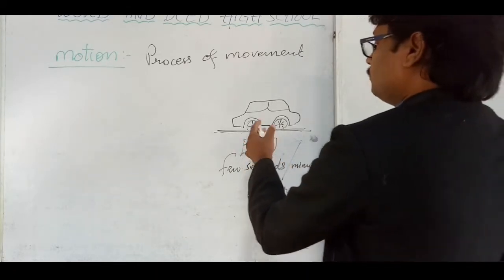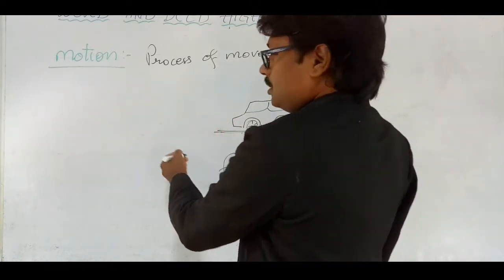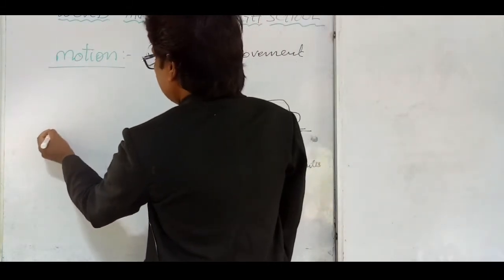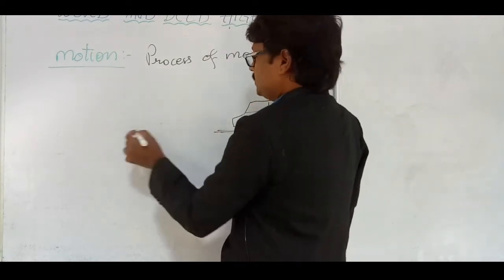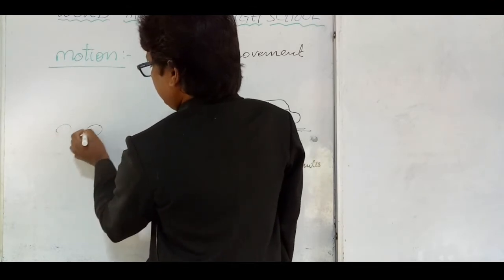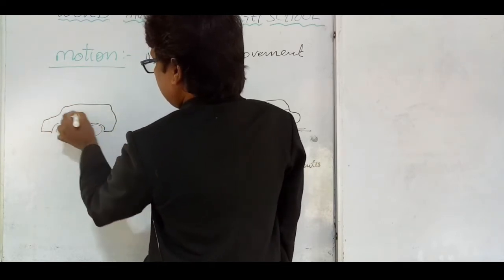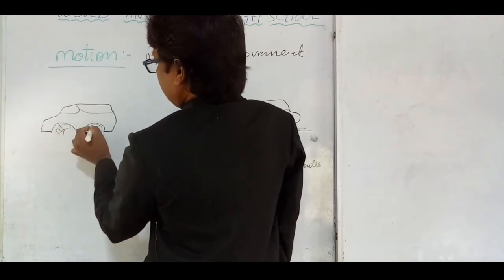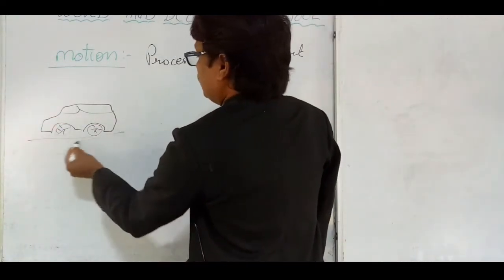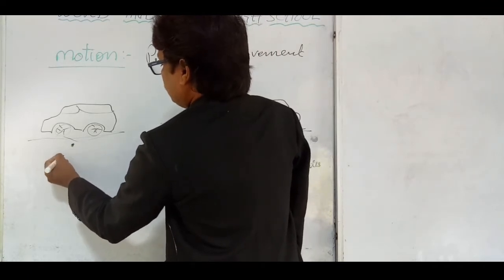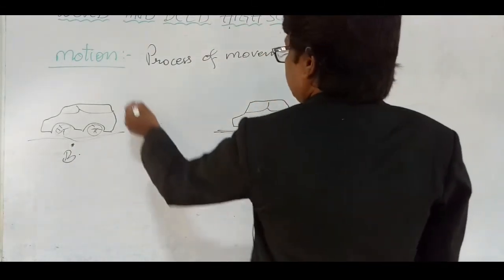if the position of the vehicle changes from one place to another after some time — after few seconds — the position of the car is at position A. After few seconds, the position of the car is changed. After few seconds, the position of the car came to point B. So then you can say the vehicle is in motion.